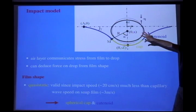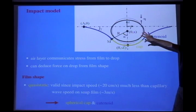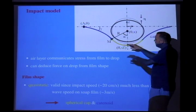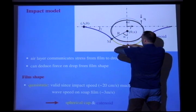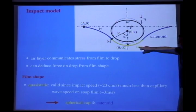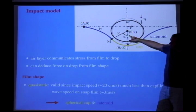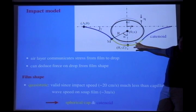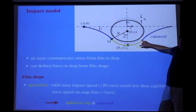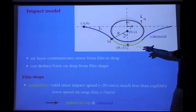You tell me the position of the drop, and then you calculate the interface by finding the minimal surface — it's a soap film. Basically you say there's a spherical cap which matches onto the drop, and then you have a minimal surface here. It has to have zero mean curvature, and the only surface with zero mean curvature in 3D is a catenoid. We basically match the spherical cap onto a catenoid, which gives us the shape of the film as a function of the position of the drop. That gives us the force field acting on the drop.